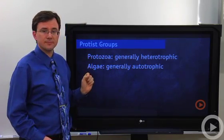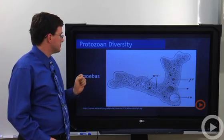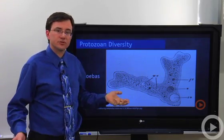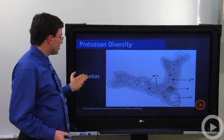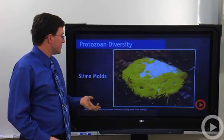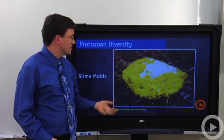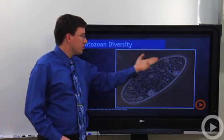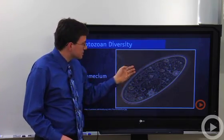So let's take a look at the protozoa. They are a very diverse organization. They include things ranging from amoeba to slime molds to things called paramecium that use little cilia to move around.